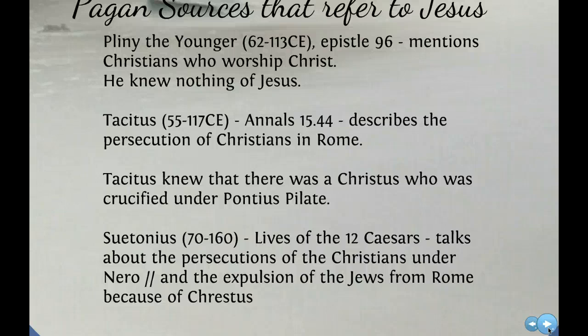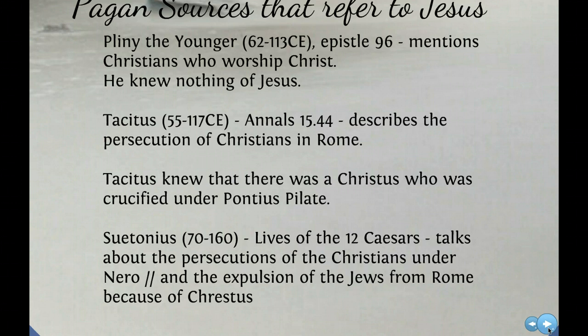The test Pliny came up with was that they were to deny Christ and sacrifice an offering to a pagan god. He said no Christian could do this. So he knew a little bit about Christianity, but he wrote Epistle 96 to Trajan to make sure that he was doing the right thing. Trajan being the emperor at the time, and Trajan wrote back and said yes, you're doing exactly what you need to do.